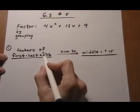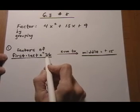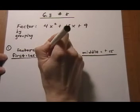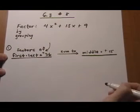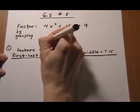So first of all I look at the sign of the first times last. It's a positive 36. Because it's positive, that tells me that the two factors have to have the same sign. They're either going to be minus, minus or plus, plus.